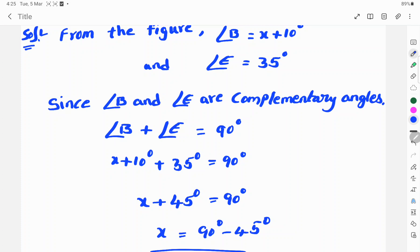So angle B is x plus 10 degrees and angle E is 35 degrees equals 90 degrees. x plus 10 plus 35 is 45 degrees equals 90 degrees.